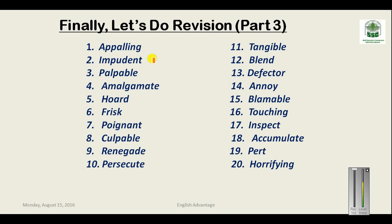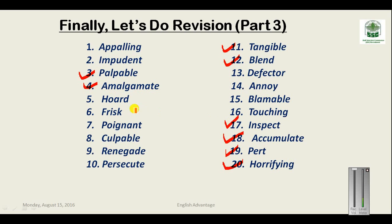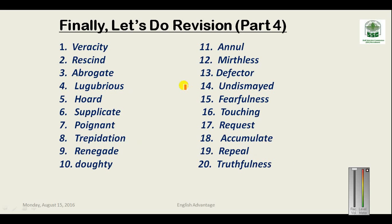Part three of revision: Appalling means horrifying or awful. Impudent means pert or disrespectful. Palpable is something tangible — that you can see and feel. Amalgamate means to mix or blend. Hoard means to accumulate. Frisk means to inspect or examine someone. Poignant means something very moving or touching. Culpable — a person who is accused or blameable. Renegade is a defector or traitor. Persecute means to annoy or harass someone.